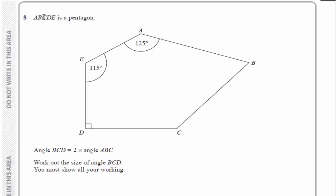Question eight. A, B, C, D, E is a pentagon. Here it is, five-sided shape.